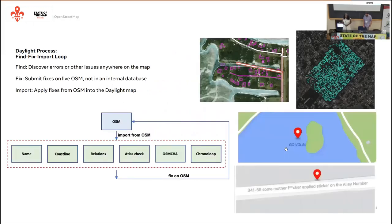So what does the Daylight process look like? It's a four-week find-fix-import loop, where first we take a snapshot of OpenStreetMap. In this snapshot, we find or discover errors or other issues anywhere on the map. We then submit these fixes directly into OSM — not an internal database, but they happen on live OSM. And then these fixes are imported into our Daylight map.